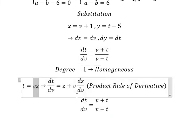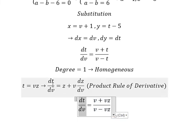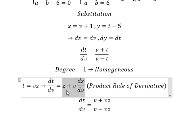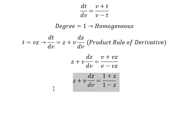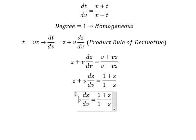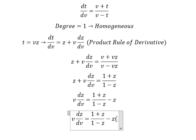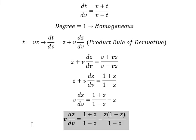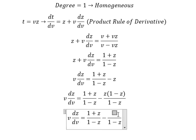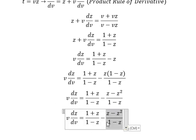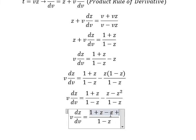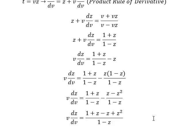I substitute this expression in for t and simplify. We cancel v from the numerator and denominator. Moving z to the right gives us negative z. Then we apply a common denominator, which gives z minus z squared in one term and negative z plus z squared in another. We then simplify by factoring out z.